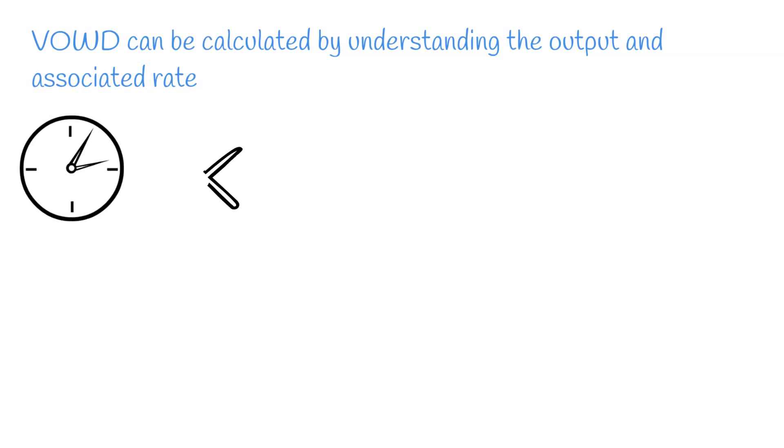VOWD can be calculated by understanding the output and associated rate. For example, hours worked on site multiplied by the agreed hourly rate. Okay, fair enough. That's massively oversimplified how VOWD is calculated. In reality, you'll have many aspects to consider.